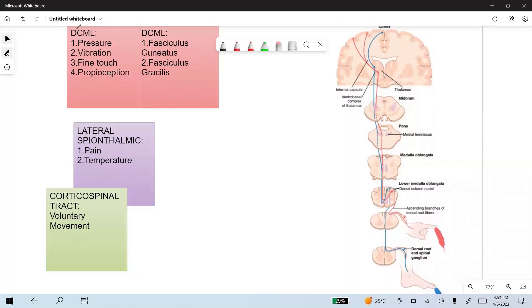The dorsal column medial lemniscus is basically the ascending tract that carries the sensory information: pressure, vibration, fine touch, and proprioception.